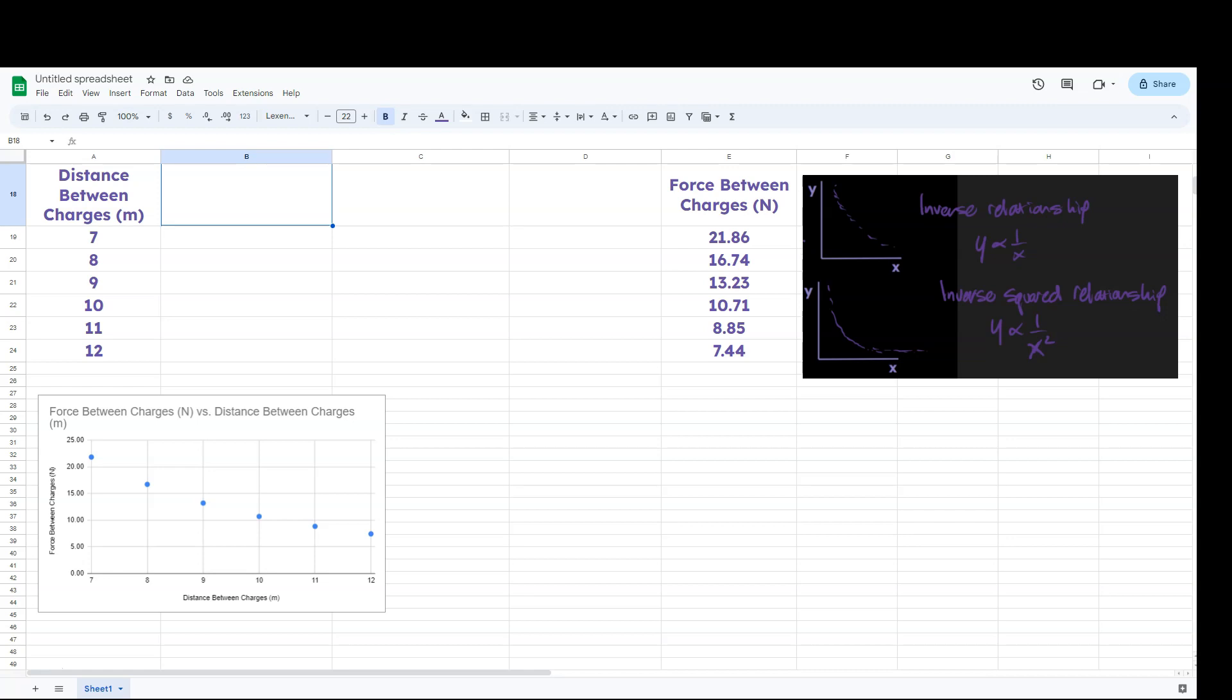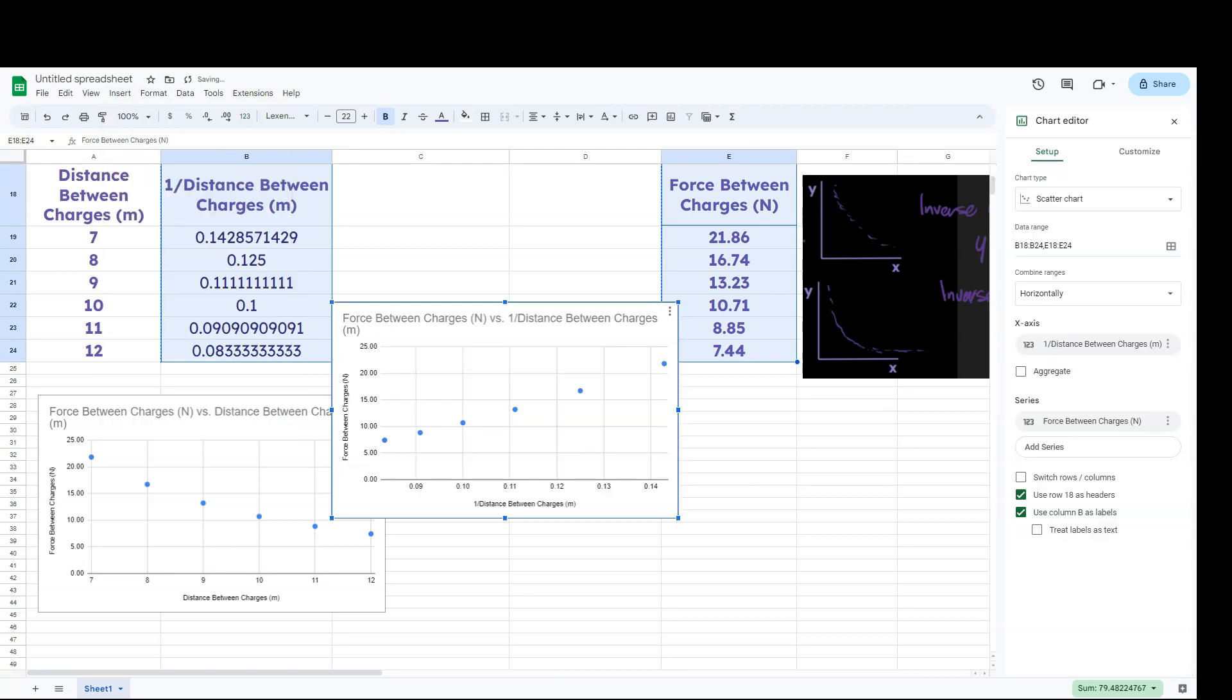So I don't want to plot distance between charges. Let's try plotting one over the distance between charges. So I'm just going to type equals one divided by and this cell over here. I'm going to click and hit the enter key and I can go ahead and fill the rest of this because it will follow the same pattern. The program is smart enough to do that. And now let's take this and instead of plotting the two data sets that we had previously, let's plot these two and see what happens.